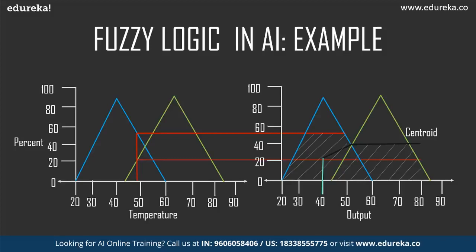These rules apply to the membership functions to produce a crisp output value to drive the system. At an input value of around 50 degrees, we intersect the membership functions, applying two rules where the intersection occurs on both functions. We extend the intersection points to the output functions, then truncate the output functions at the height of the intersecting points. In real working systems there would be many inputs and outputs, resulting in more complex functions and rules.